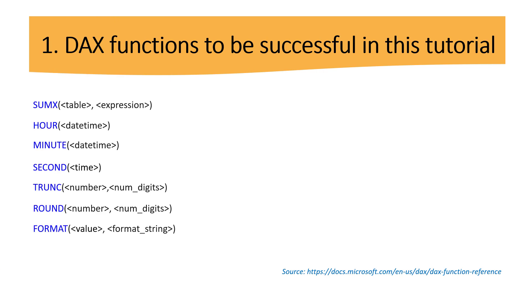What are the DAX functions needed for this tutorial? If you are not familiar with these functions, please stop the video and check the source linked here — you'll find the syntax and nice examples. Briefly: with SUMX we perform row-level calculations; with HOUR, MINUTE, and SECOND we extract those values from a datetime column; with TRUNC we get the integer part of a decimal; with ROUND you may be familiar from Excel; and with FORMAT we get the right output format.